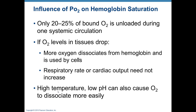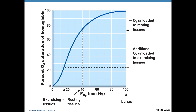High temperature makes O2 come off hemoglobin more easily — which is useful because exercise and increased cellular respiration generate heat, signaling that tissues need more oxygen. Low pH is another trigger: excess CO2 building up in tissue fluids is an indicator of active cellular respiration. CO2 acts like an acid, and more of it causes the pH of body fluids to go down. We'll be seeing more of that shortly.